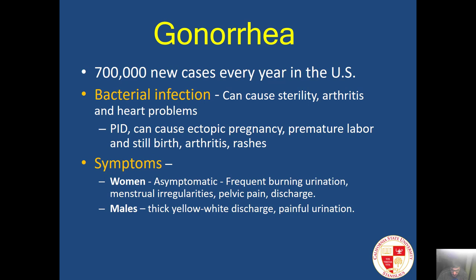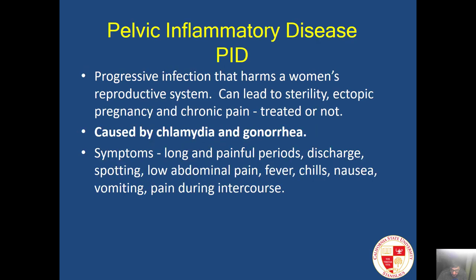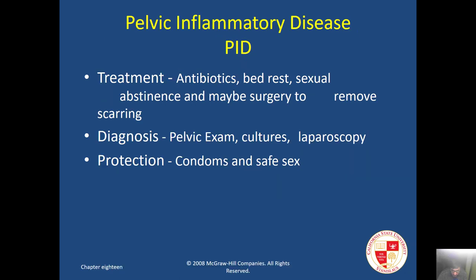Gonorrhea remains a common sexually transmitted disease throughout the United States. It can be life-changing, causing sterility, arthritis, and heart problems. A consequence of these sexually transmitted diseases is pelvic inflammatory disease, which can lead to sterility, ectopic pregnancy, and chronic pain. Treatments for pelvic inflammatory disease include antibiotics, bed rest, sexual abstinence, and possibly surgery to remove scarring.